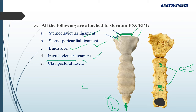The clavipectoral fascia is attached to the lower surface of the clavicle at the subclavian groove — it is not attached to the sternum. It attaches to the clavicle and extends into the axilla. So clavipectoral fascia is the answer — it is not attached to the sternum.